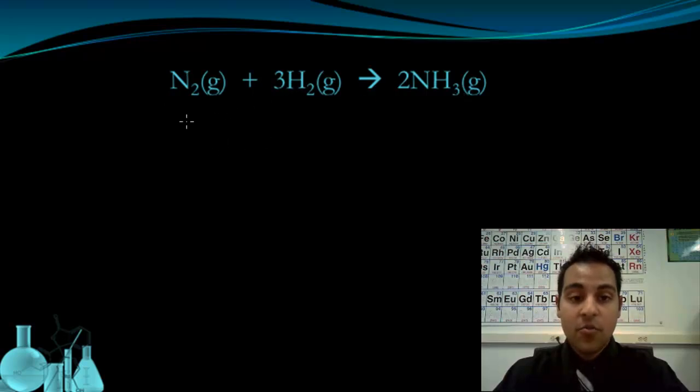Those relative amounts, one nitrogen for three hydrogen yielding two ammonia, can also be represented as moles. One mole of N2 will react with three moles of H2 to produce two moles of ammonia.